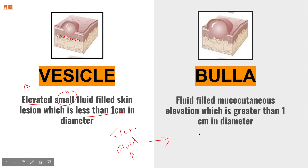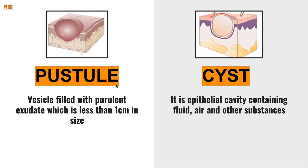A bulla is the same thing except it is greater than one centimeter and it is mucocutaneous in nature. A pustule is also fluid-filled, however it's purulent — by purulent, all we mean is pus, an exudate, which is less than one centimeter in size. Anything that's got pustules will have pus, also known as purulent exudate, and it is less than one centimeter in diameter.